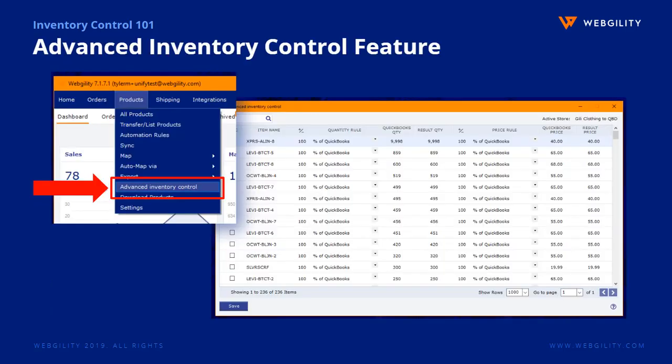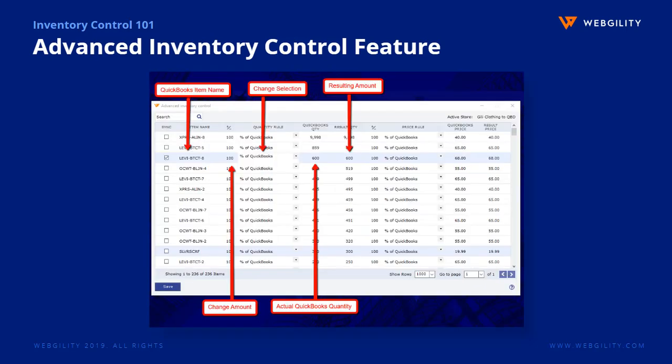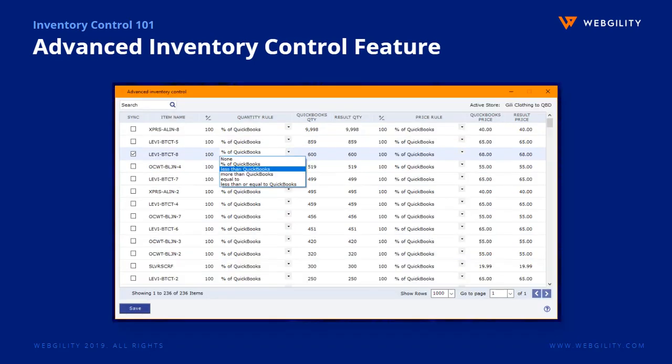You can access the Inventory Control Tool by going to the Products menu in Webgility Desktop. The tool will pop up in a new screen and displays your entire item list. By adjusting the change amount and the change selection, Webgility Desktop can adjust the quantities and/or prices being synced to the online channel by either a set number or a percentage.